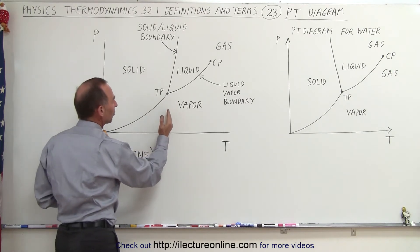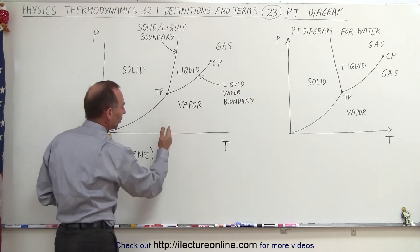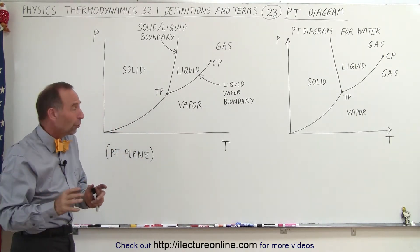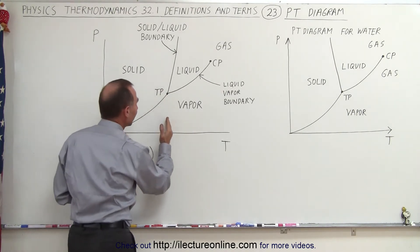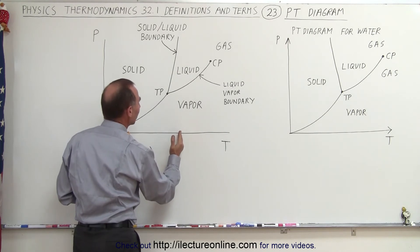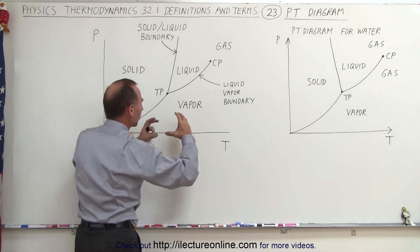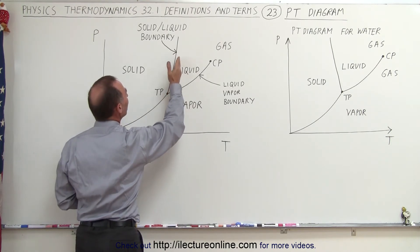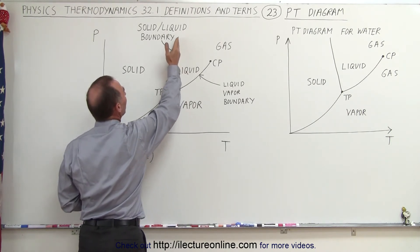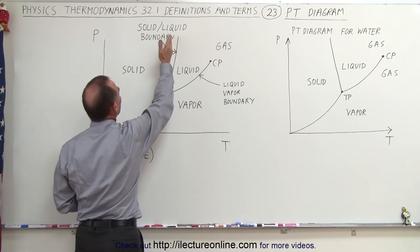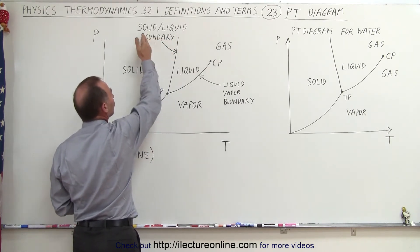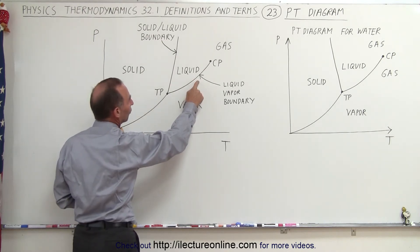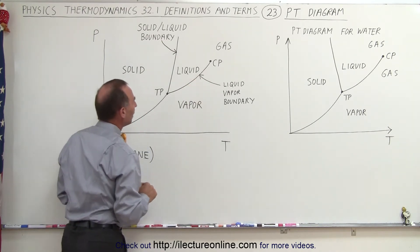Once you reach the triple point, at the temperature that coincides with it — still relatively low temperatures for most substances — as the pressure increases and you compress the vapor, the vapor will first turn into a liquid. If you continue to increase the pressure, eventually that liquid will turn into a solid. We'll cross what we call the solid-to-liquid boundary, and here we also have the liquid-to-vapor boundary.